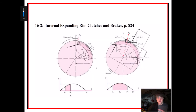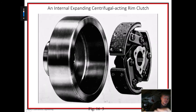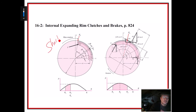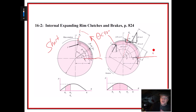Section 16-2 covers the internal expanding rim clutch or brake — the typical configuration with a drum on the outside rotating and a shoe on the inside. The one on the left is a short shoe. The angle from the pin, measured to the extent of the shoe, is less than 90 degrees for a short shoe. For a long shoe, that angle measured from the pin is greater than 90 degrees.